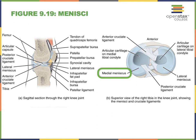So that leaves us with the menisci. Let's take a look at a superior view of our knee joint—we've removed the femur. On the side with the bigger bone we have our tibia, and here we have the much smaller bone for the fibula. Notice we have a C-shaped structure on each side—those are the different menisci.